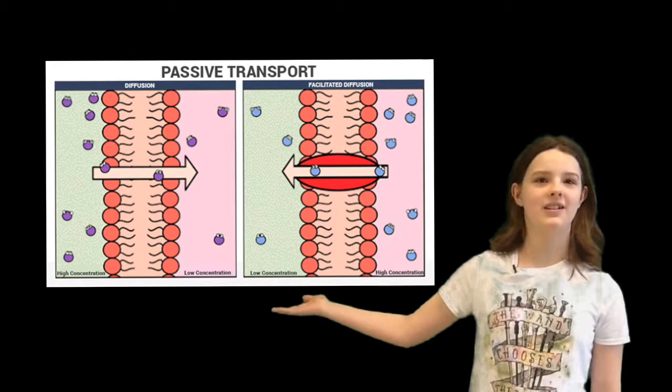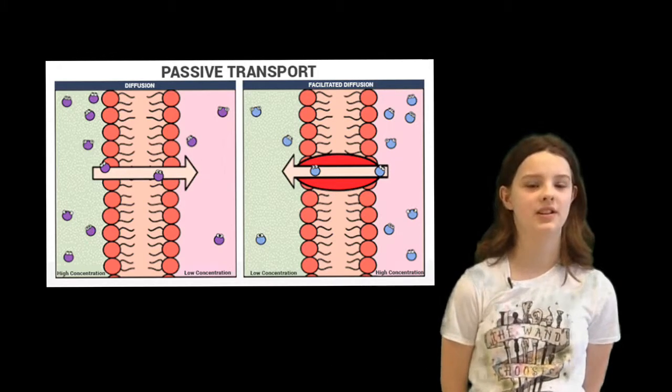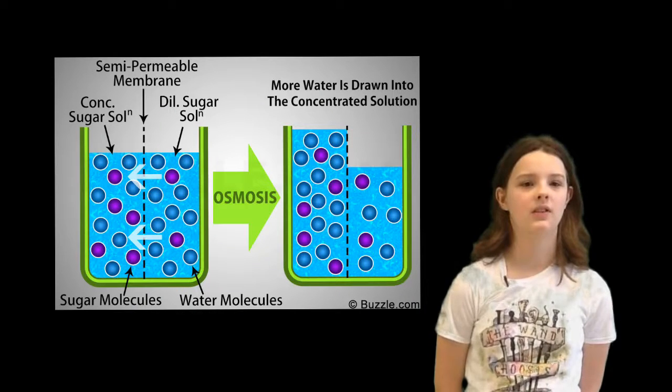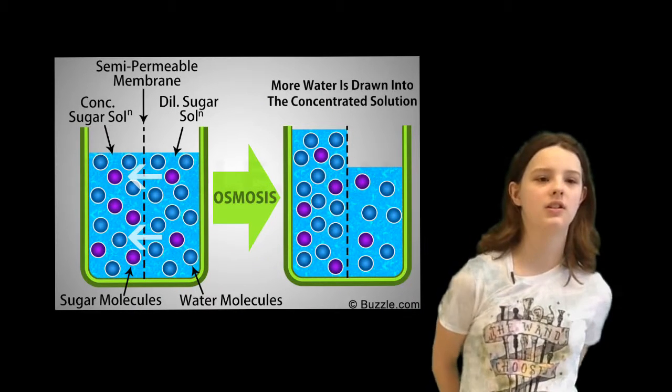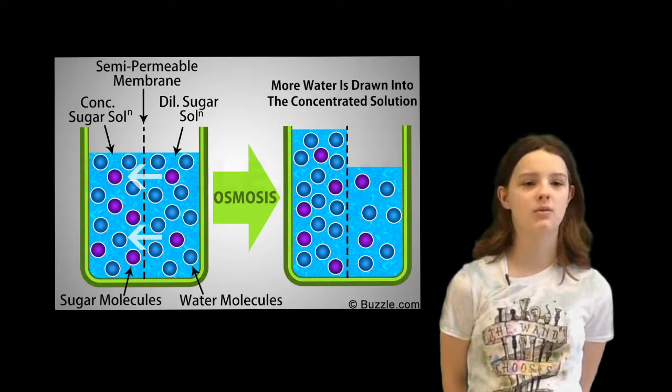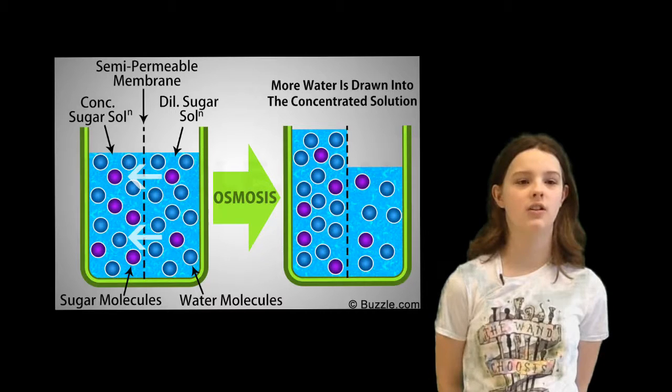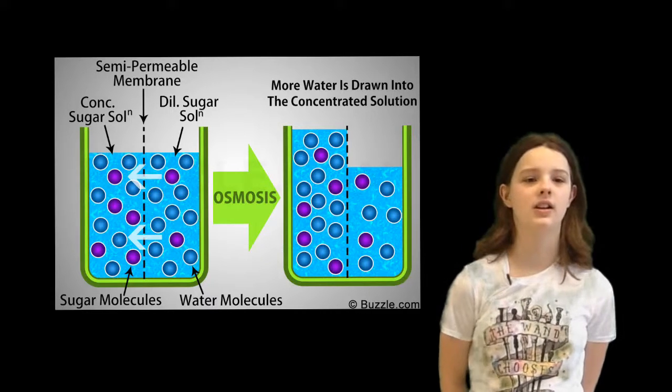Here are three examples. Osmosis is the diffusion of a fluid, usually water, through a cell membrane without using energy. In osmosis, the solvent, also known as the liquid, will move towards the solute, also known as the solid, and attempt to dissolve it.